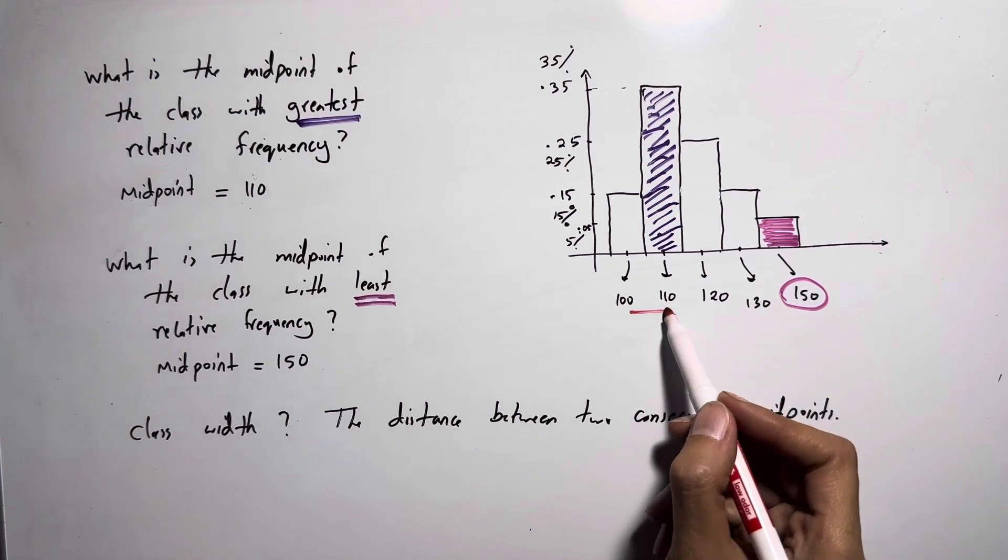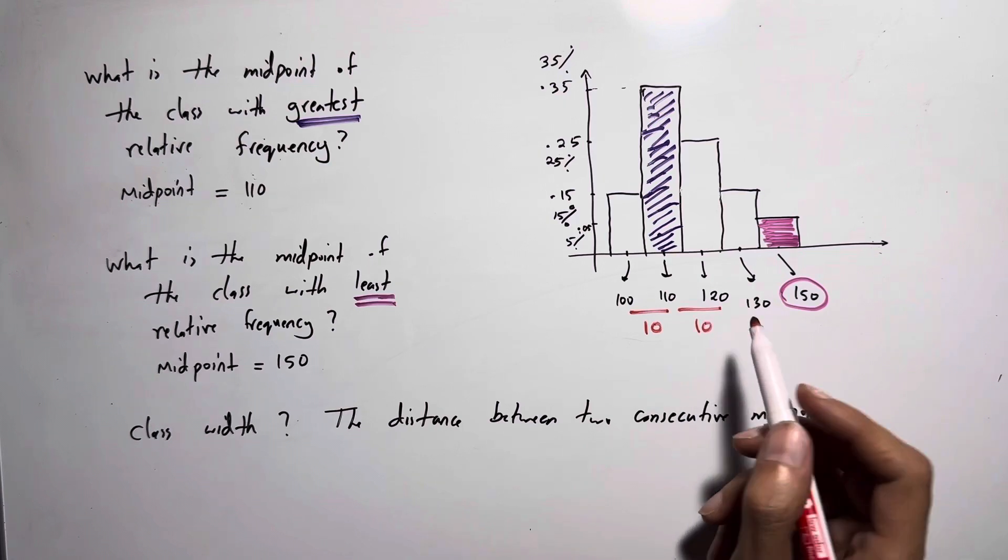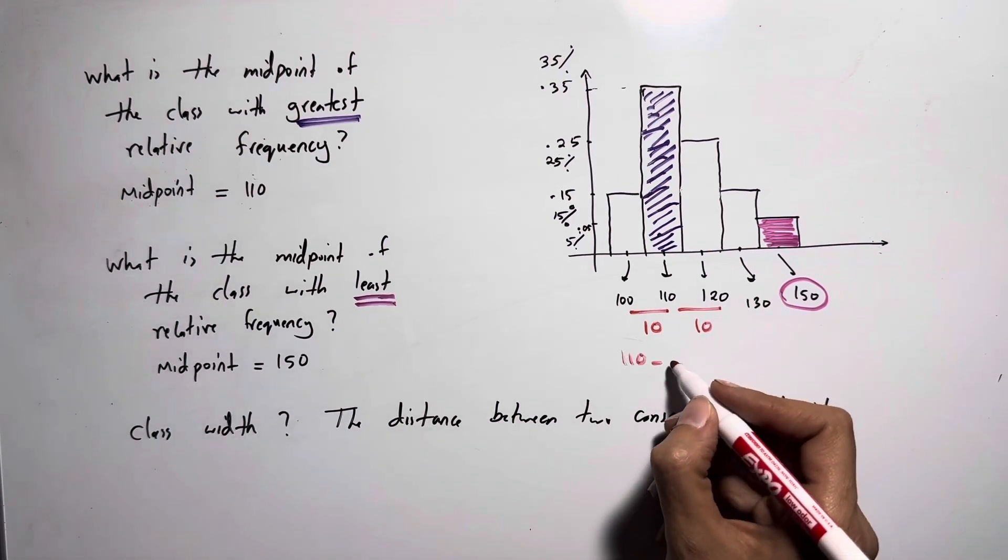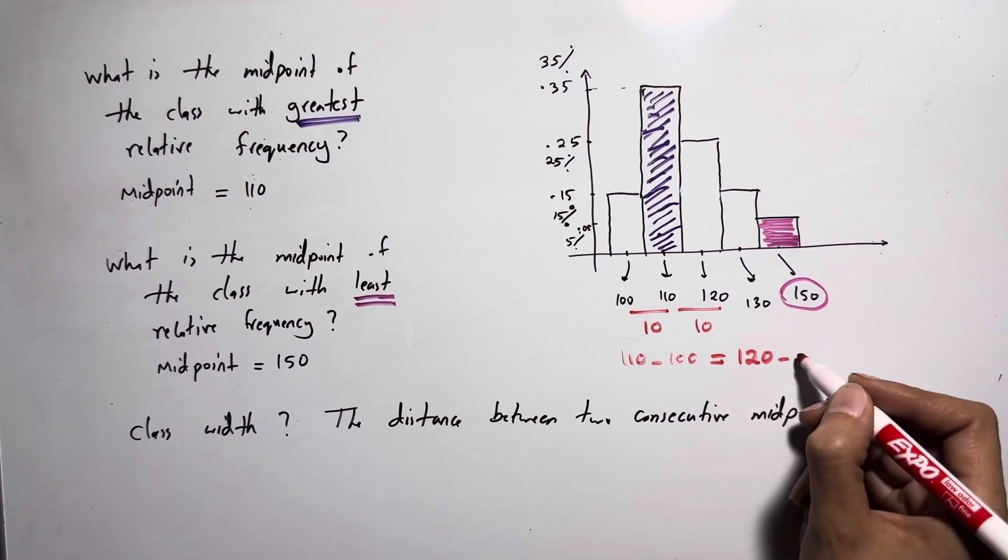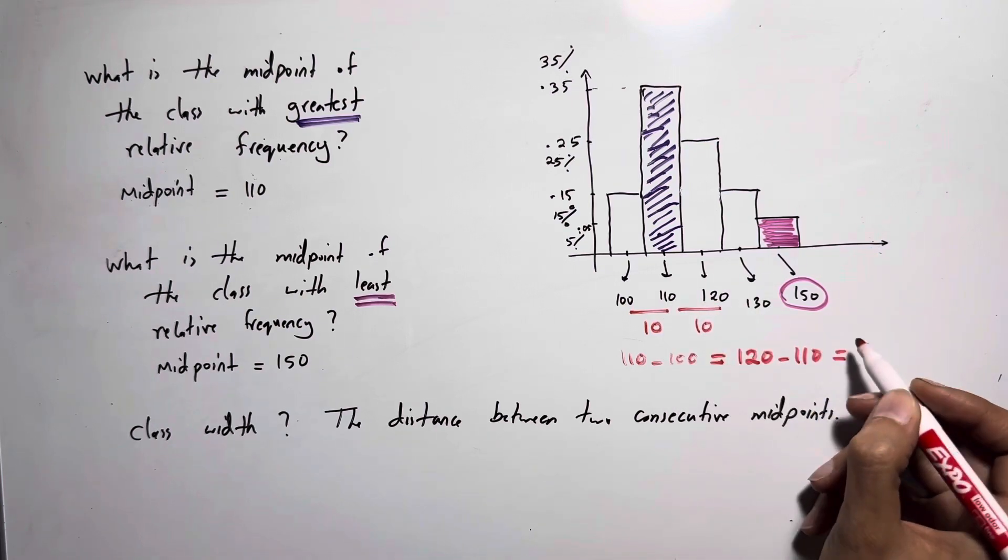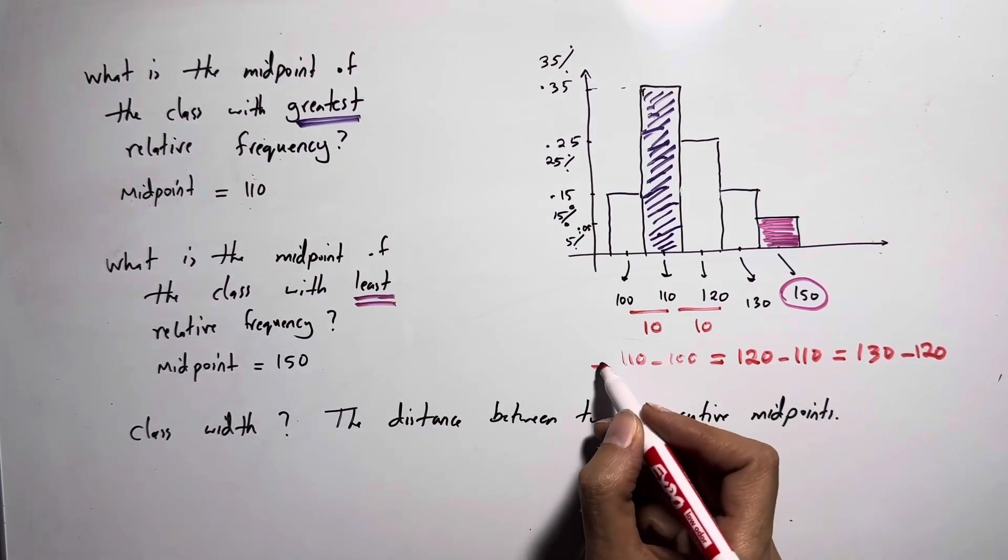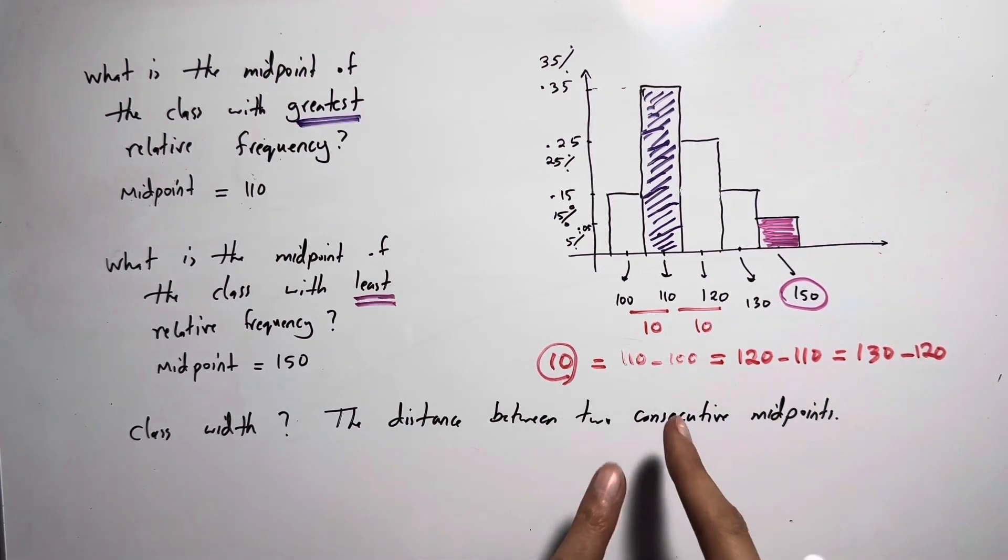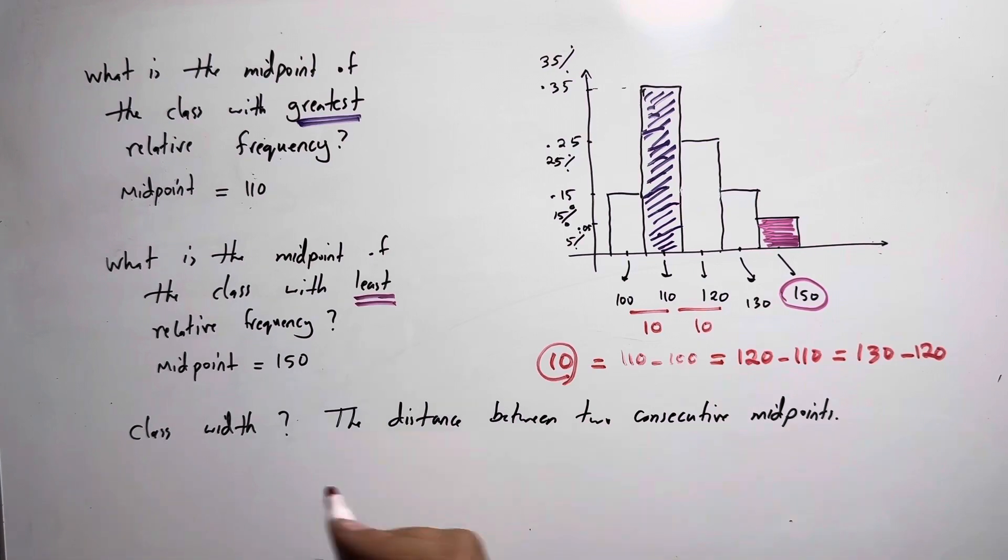100 to 110 is 10 units, 110 to 120 is 10 units. This is the distance between them, or you can say that 110 minus 100 is the same as 120 minus 110, which is the same as 130 minus 120. And all of these are equal to 10. So the difference between two consecutive midpoints, this distance which is class width, equals 10.